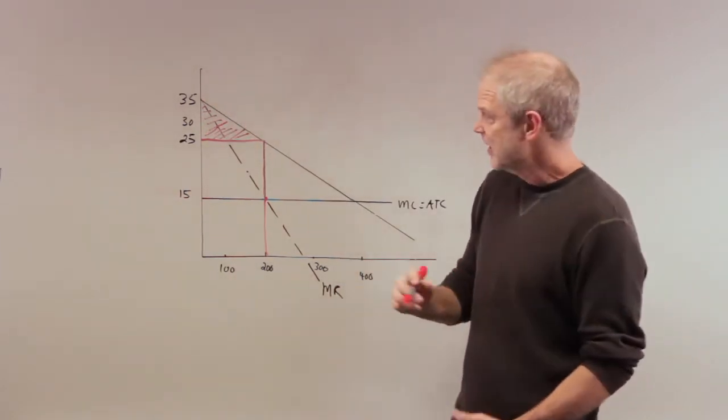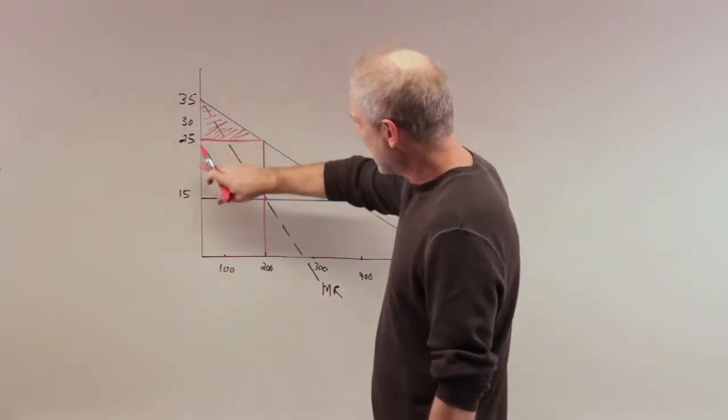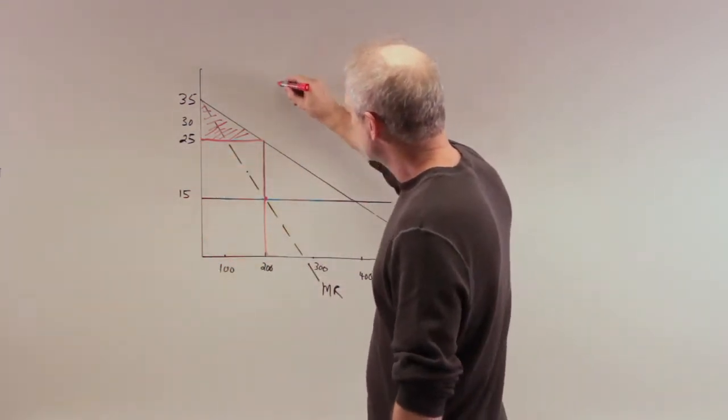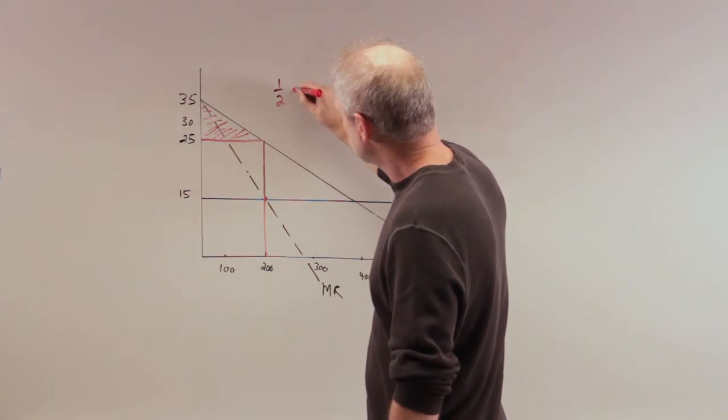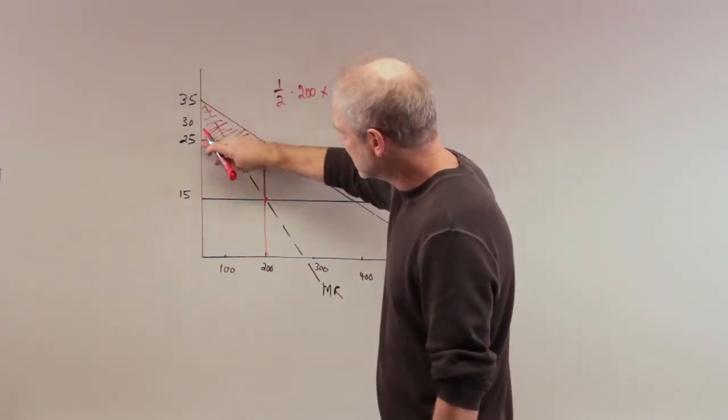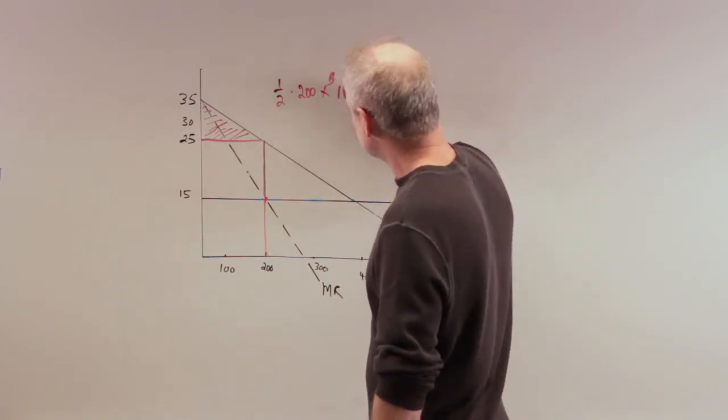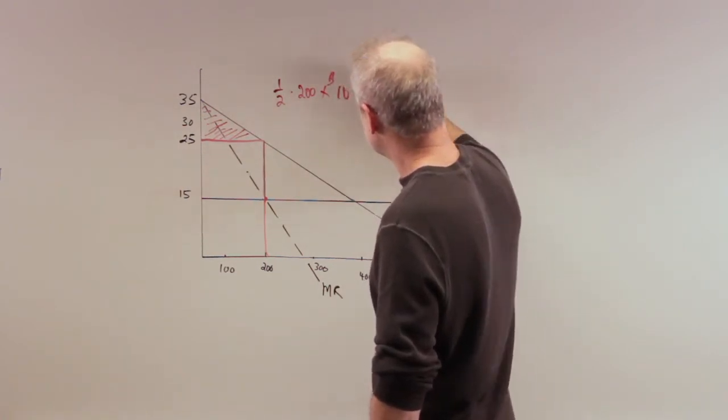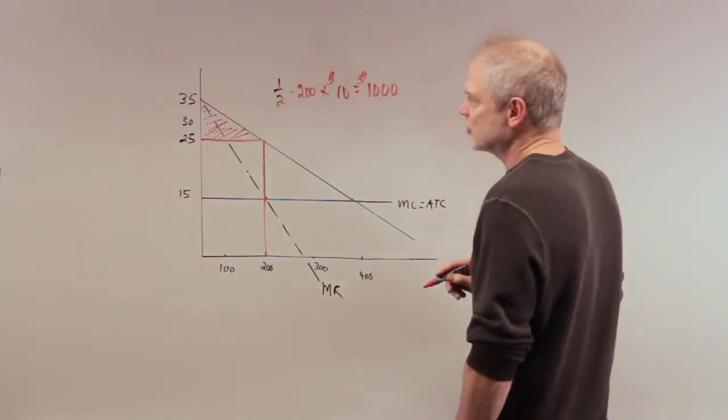We are capturing that area right there, another triangle. So what's the area? The base is 200, so we have one half times 200 units times this distance, which is ten dollars, which equals one thousand dollars. So the consumer surplus under no price discrimination is a thousand dollars.